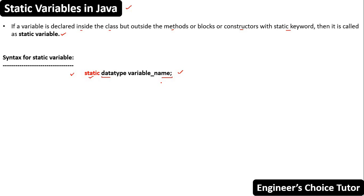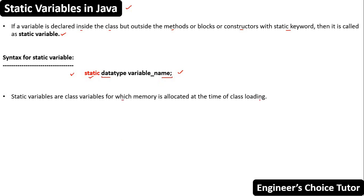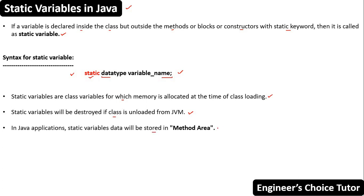Static variables are class variables for which memory is allocated at the time of class loading. Static variables will be destroyed if the class is unloaded from the JVM or when the JVM shuts down. In Java applications, static variable data will be stored in the method area, where every class's byte code is loaded and stored, including static variables.